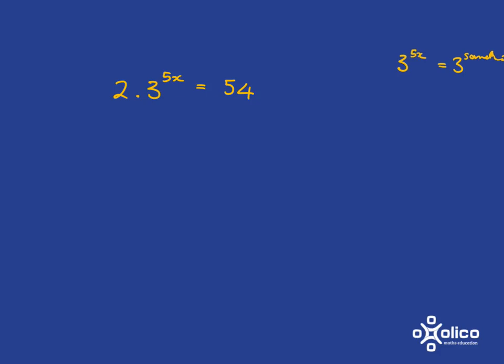So the things that are in our way right now is the fact that we've got this 2 here on this side. We don't want that there. And we also don't want this to be a number. We want it to be 3 to the power of something. Well, let's first get rid of the 2 so we can get this left-hand side into its correct format.